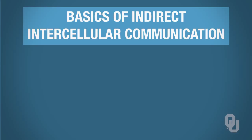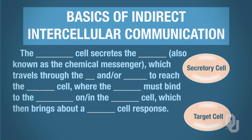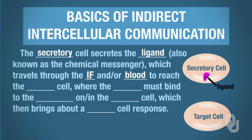Everything we're going to be talking about from this moment on is indirect communication, meaning the secretory cell and the target cell are not physically connected. The secretory cell secretes a ligand — also referred to as a chemical messenger — which then travels through the interstitial fluid, and may also travel through the blood to reach the target cell.